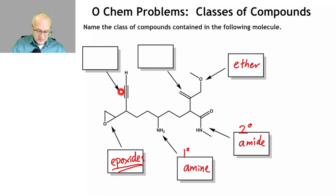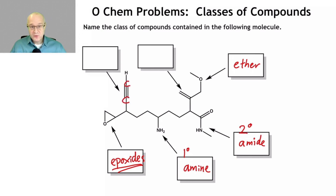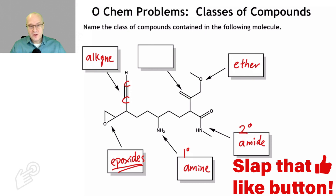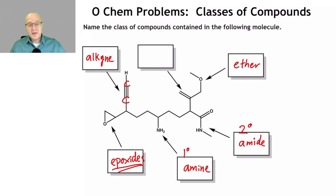This one — the arrow is pointing at this group right here. You may not know this, but there's a carbon here and a carbon here. That is the skeletal formula for an alkyne. Remember your carbon-based groups or your hydrocarbon groups: alkane, alkene, alkyne, and aromatic. Alkynes have carbon-to-carbon triple bonds.